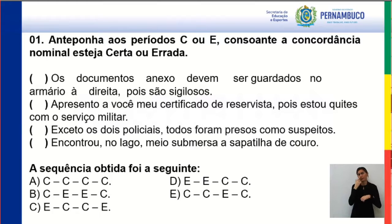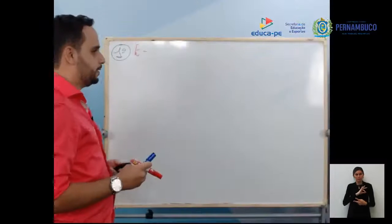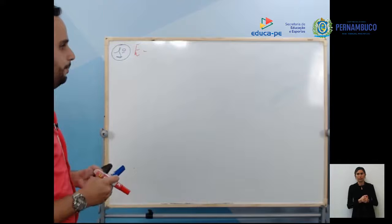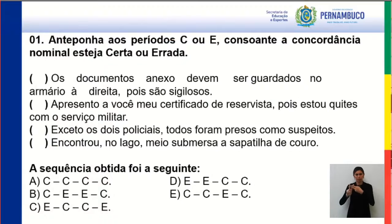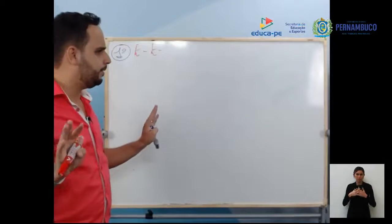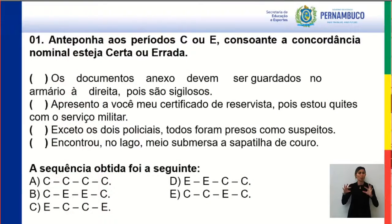Próximo parêntese: 'Exceto os dois policiais, todos foram presos como suspeitos.' Tem algum erro nessa frase? Tranquilo — a concordância nominal está bonitinha. Os dois policiais, todos foram presos como suspeitos. Então cede certo. Já sei qual é a resposta.